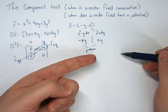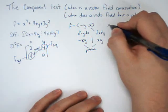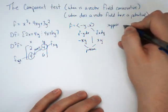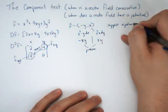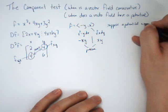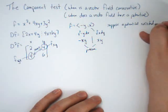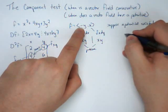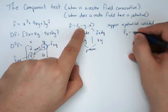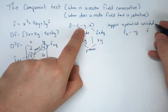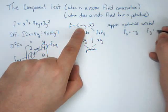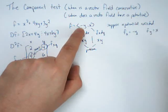We can show, however, there is no potential. Suppose a potential existed. Then what that means is our f sub x would have to be negative y, and our f sub y would have to be positive x.